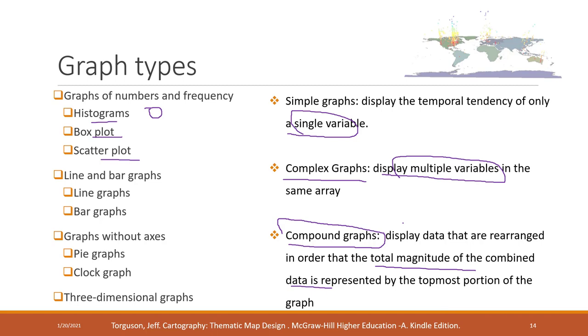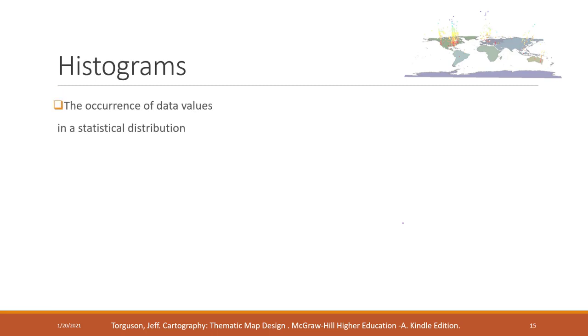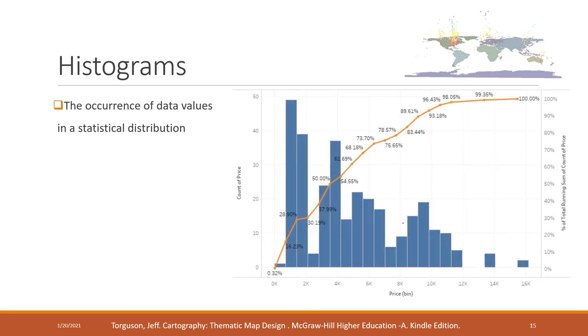First, let's look at the histogram. Histogram is used to show the occurrence of data values in a statistical distribution. Basically, this is used to show a single variable. For example, here we are looking at how the prices are distributed. We're using a histogram where the x-axis is the range.